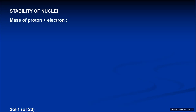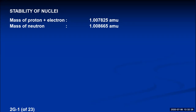This is lecture 2G and we're continuing on our topic of nuclear chemistry, where today we're going to talk about the stability of nuclei themselves. If you measure the mass of a proton plus an electron with a mass spectrometer, the mass of these two subatomic particles combined equals 1.007825 atomic mass units. The mass of a neutron, slightly higher but almost identical, is 1.0086665 AMUs. If we know the mass of the individual subatomic particles that make up atoms, then we should be able to theoretically calculate the mass of any particular nuclide or any particular atom.